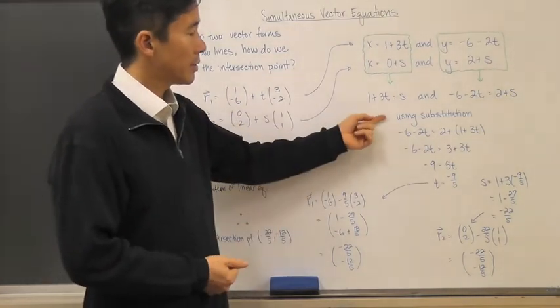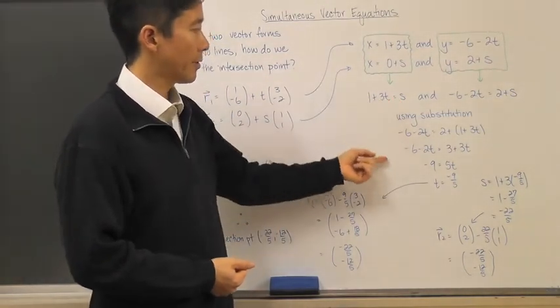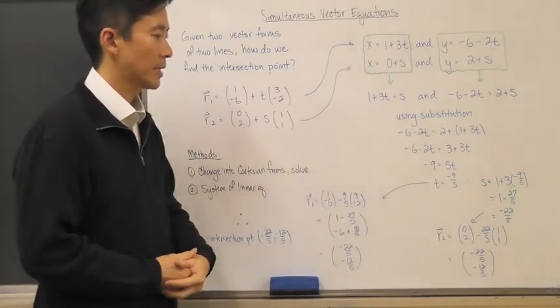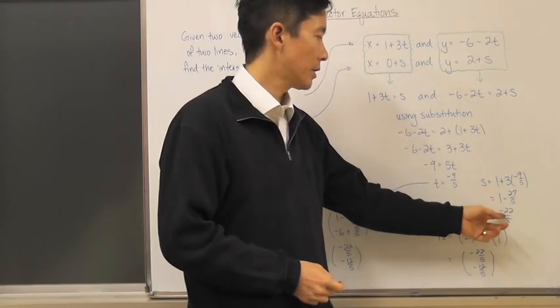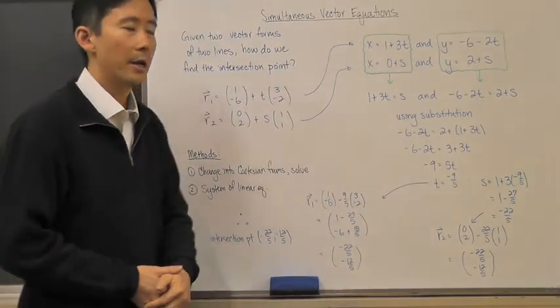Using substitution, because we already have s solved for, we come up with t = -9/5. If I solve for s, I come up with -22/5.